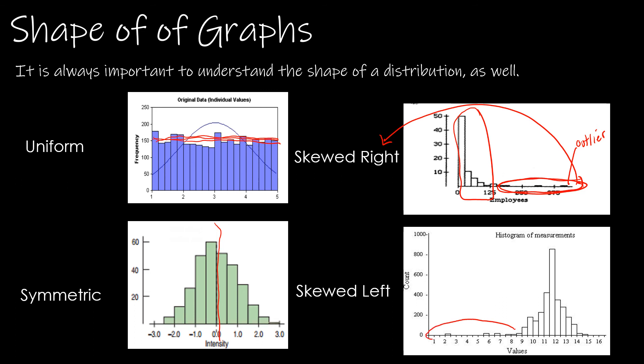On this distribution, I've got a tail on the left. And again, that is why we call that a skewed left distribution because the tail is on the left side.